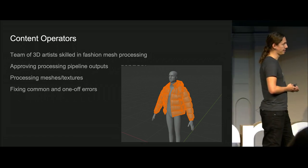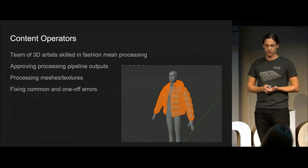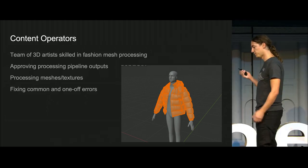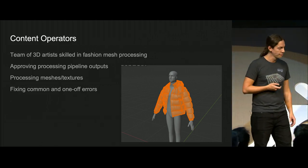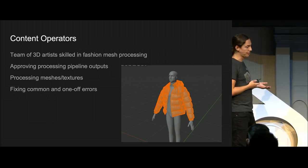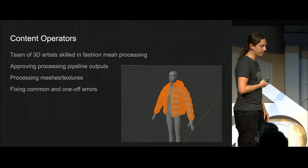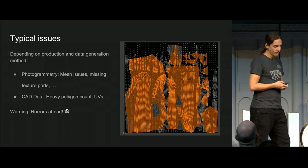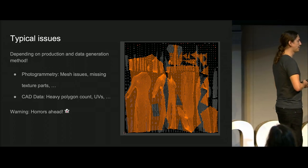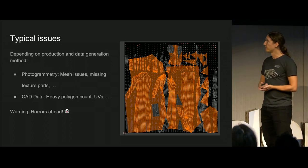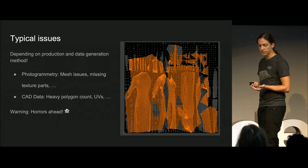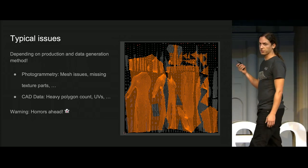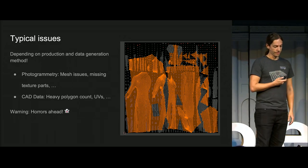We also have a team of skilled 3D artists who are very versed in creating virtual fashion. They mostly do a final check of all the 3D meshes and textures we get out of our automated tasks. They are starting and initializing processing or new iterations, but they are also skilled 3D modelers and texture artists who are fixing sometimes common and sometimes completely one-off errors in the data we get and process.